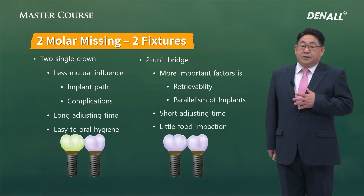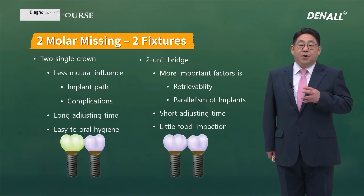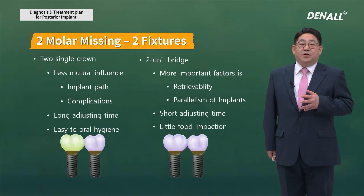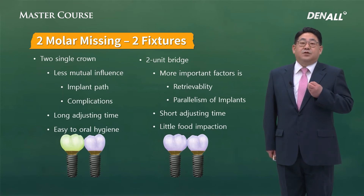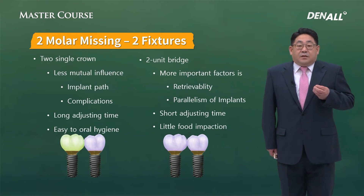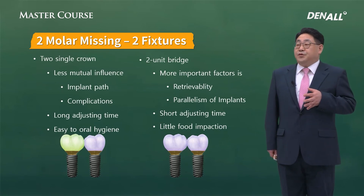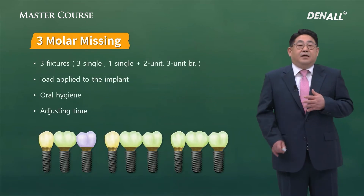When in a two-unit bridge form, retrievability needs to be emphasized even more. Implants need to be placed more parallel with each other to allow retrieval of the posterior prosthesis — otherwise, because of undercut, once connected you may not be able to retrieve it. In bridge form, because the interdental area is connected, it is more favorable for stress distribution and there is little possibility of food impaction. The time necessary for adjustment is quite short. But below the connector, there can be food impaction, so the patient will need to maintain oral hygiene very carefully.